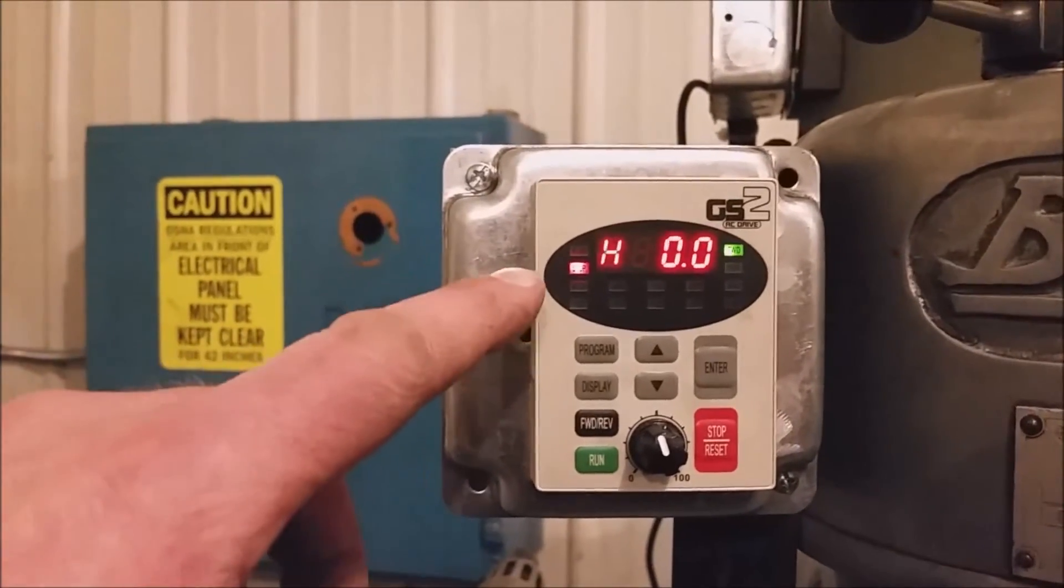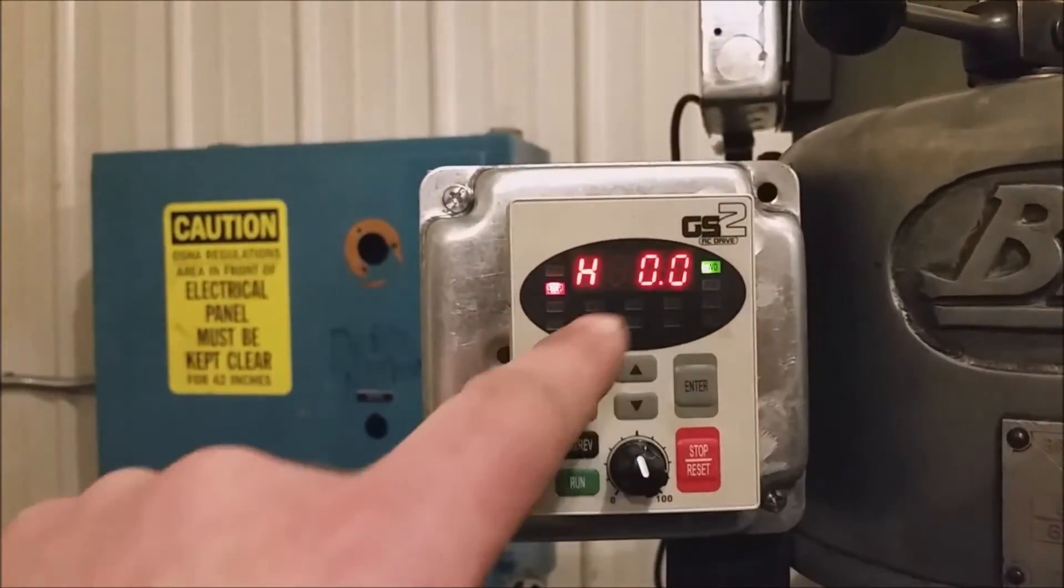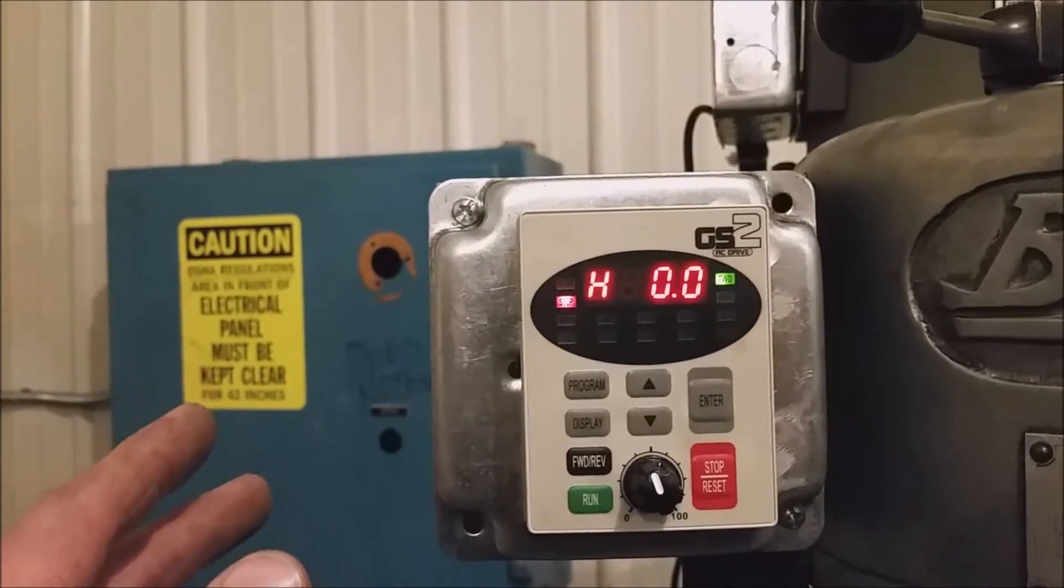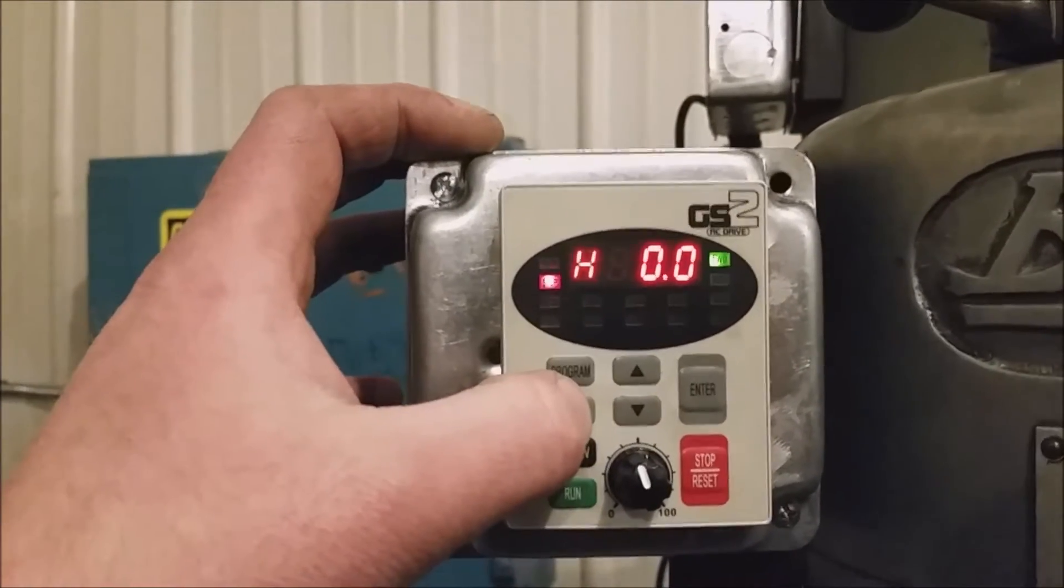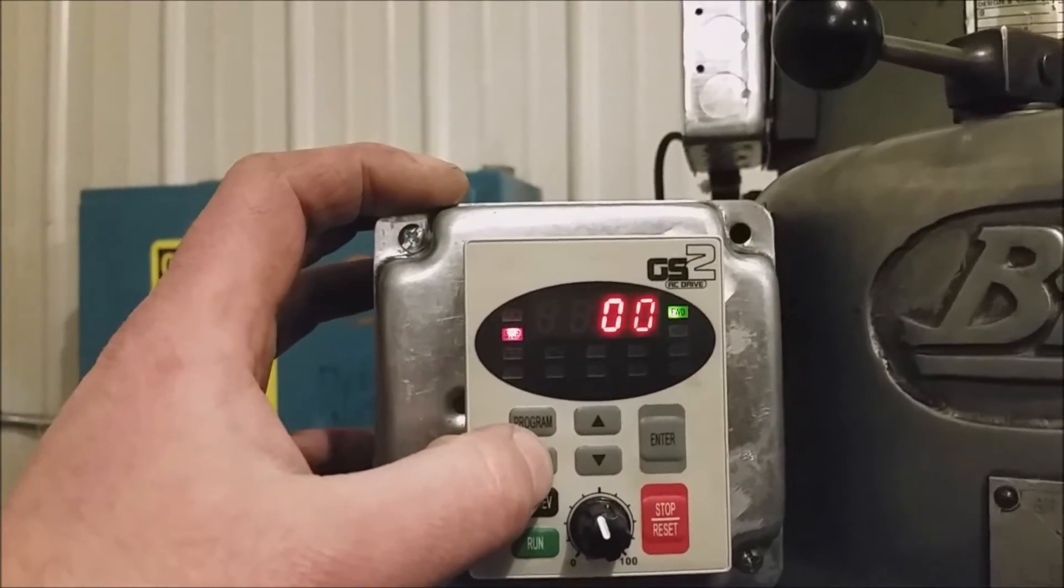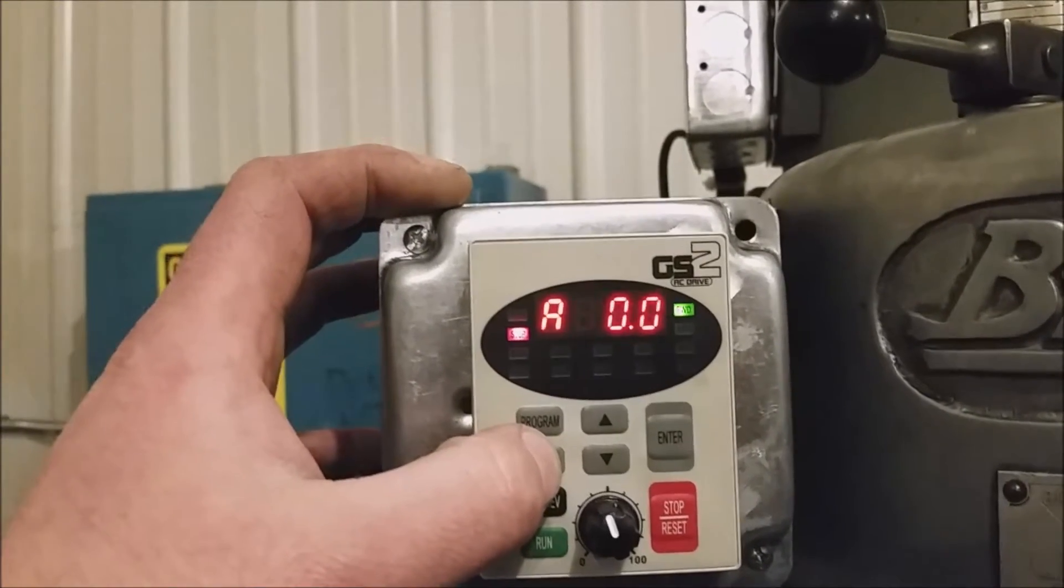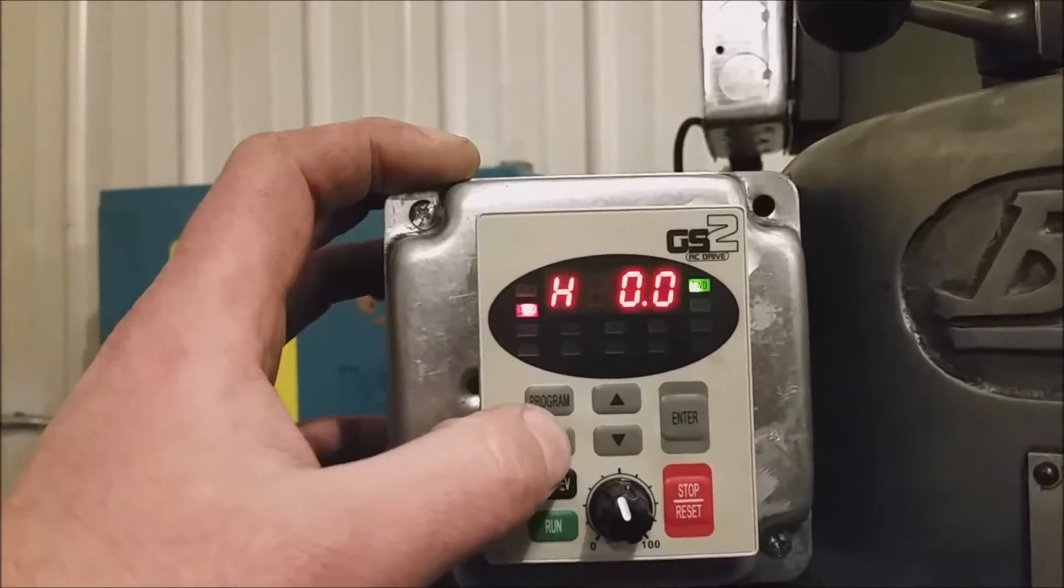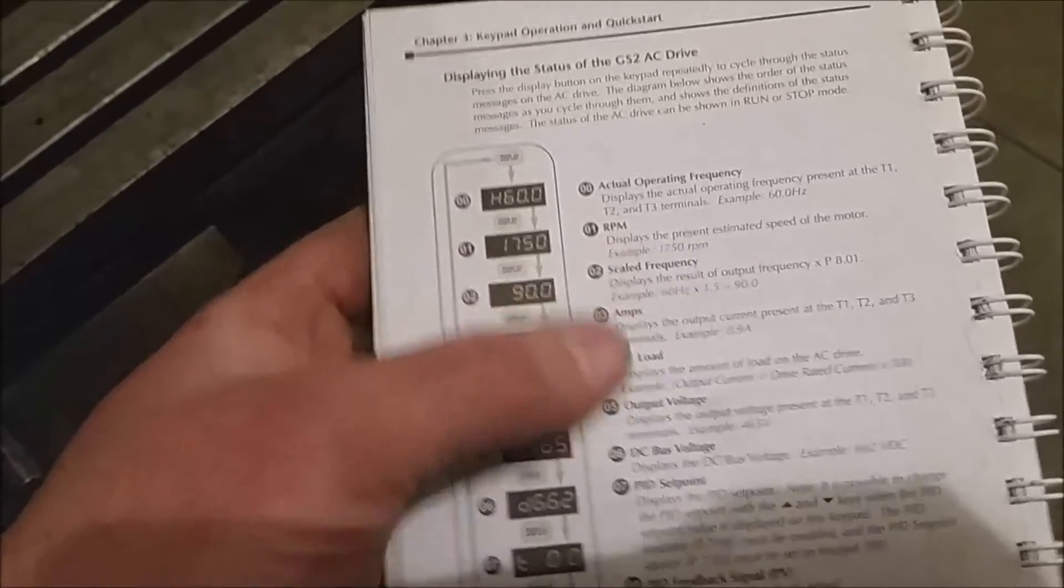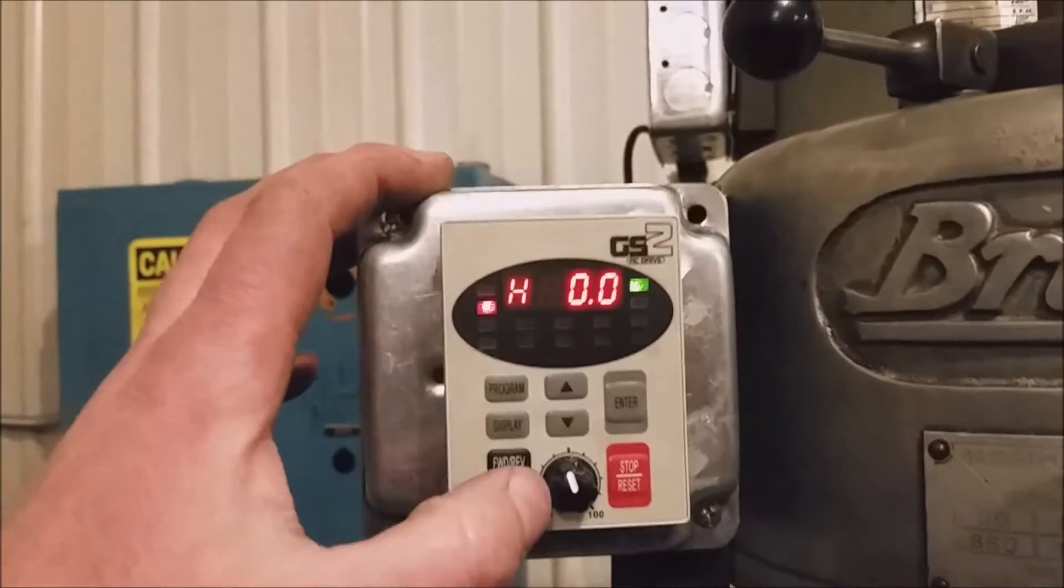When you first turn it on, what's going to pop up is hertz. Right now it's sitting at zero because the machine isn't running. You can toggle through a bunch of displays which are shown in the manual, like hertz, motor RPM, amps, whatever. I'm not going to talk about what all those are because they have a really good manual. It shows here what each one of these things are.